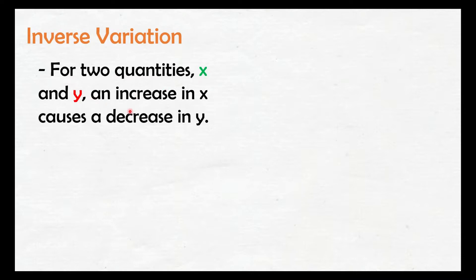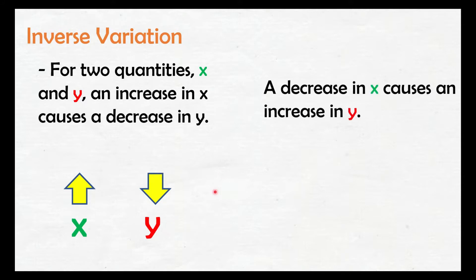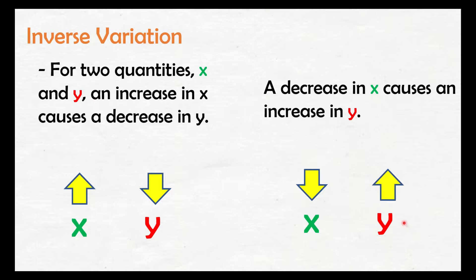For two quantities x and y, an increase in x causes a decrease in y. So when one variable increases, the other decreases — they are opposite. A decrease in x causes an increase in y. Unlike in direct variation where if x increases, y also increases, and if x decreases, y also decreases. Here in inverse variation, it is the reverse: if x increases, y decreases; or if x decreases, y increases.